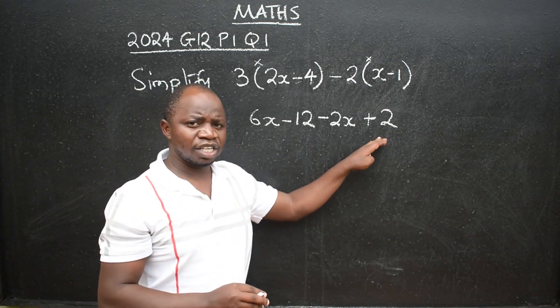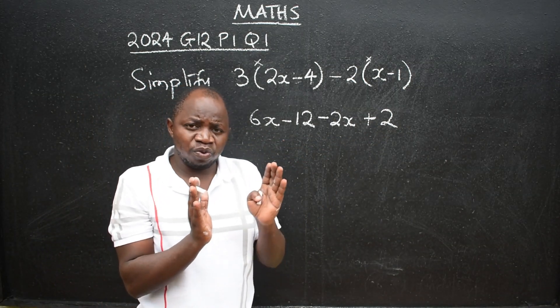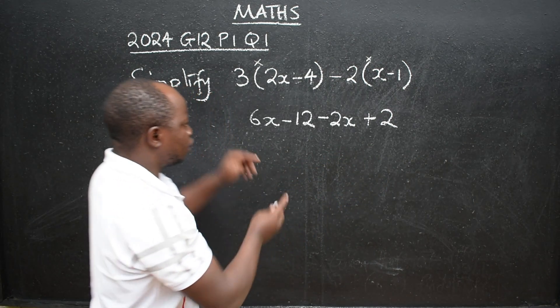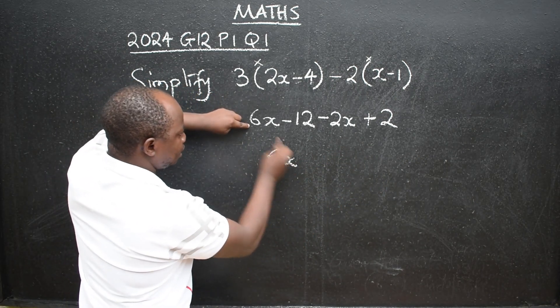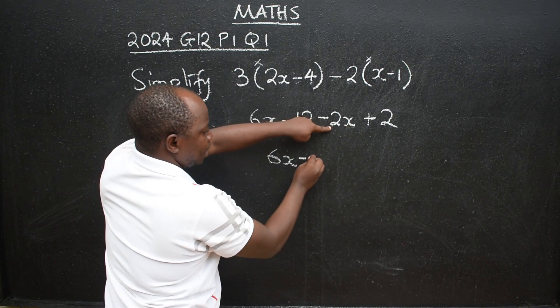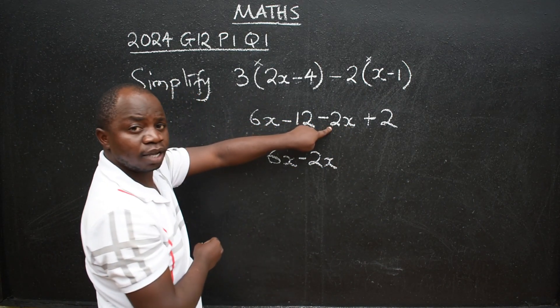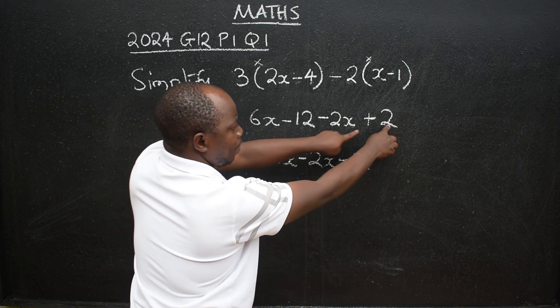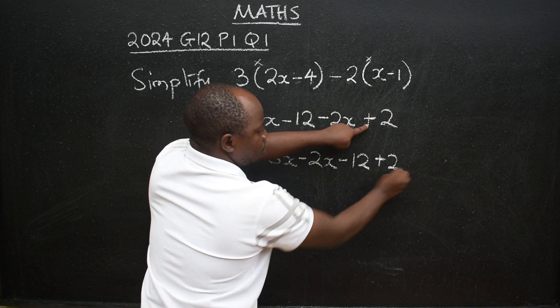At this stage, you look at like terms. Those with x must be paired. Those without x must be paired. So we have 6x. The pair is here, negative 2x. Then we have negative 12 here. The pair is here, plus 2.